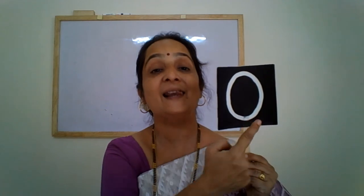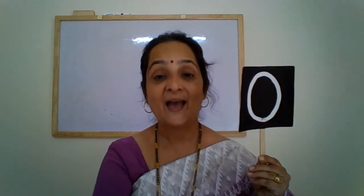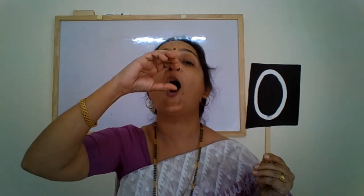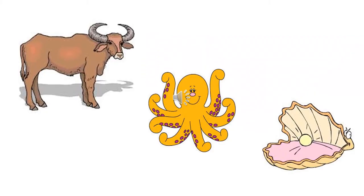O for orange. O for octopus. O for ostrich. Now let us see a few more pictures that start with the sound of the letter O. Letter O and its sound is O. So let's go and see a few pictures. O is for ox.